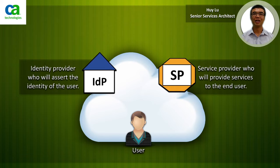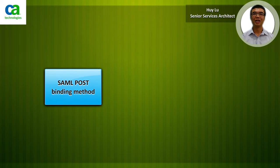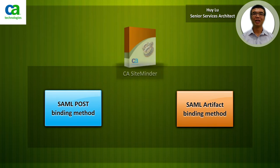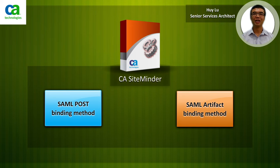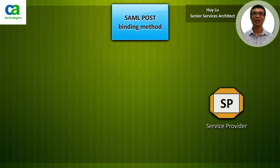In this video we will identify SAML 2.0 web single sign-on profiles. They are post binding methods and artifact binding methods. Both of these are supported by SiteMinder. Let's have a look at the post binding method.